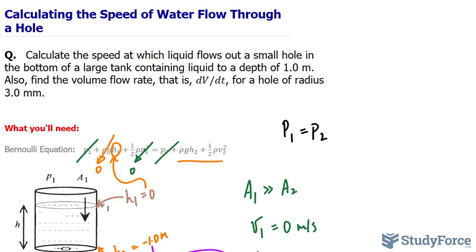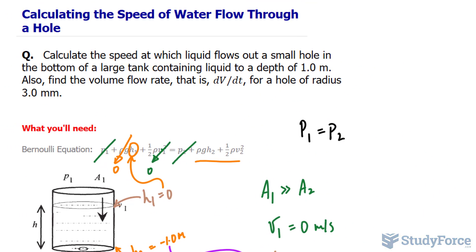Okay. Now we can move on to the second question or second part. Find the volume flow rate that is dV per dt. In other words, the volume per unit time for a hole of radius 3.0 millimeters.